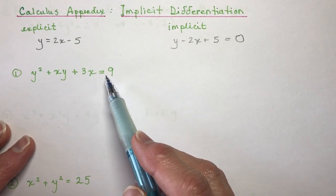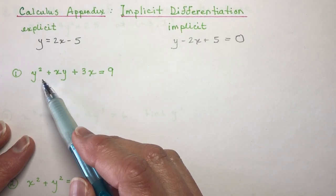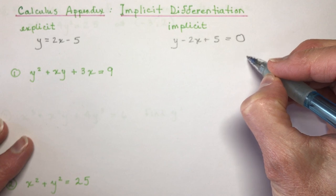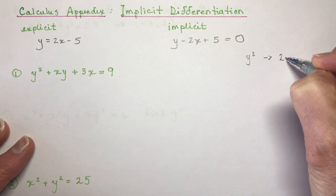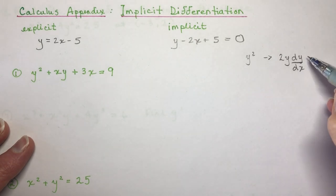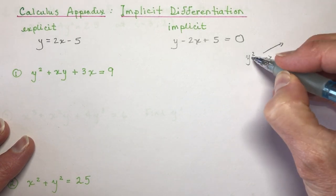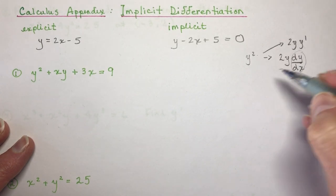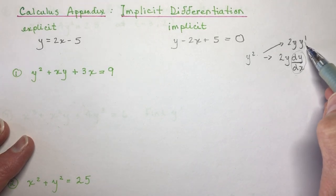In an equation where we have y's and x's mixed together and we want to take the derivative, all you have to do is take the derivative of the y's with respect to x. If I wanted you to take the derivative of y squared, that's 2y times the derivative of y with respect to x — you could write it as dy/dx, but I prefer writing it as 2y·y′.